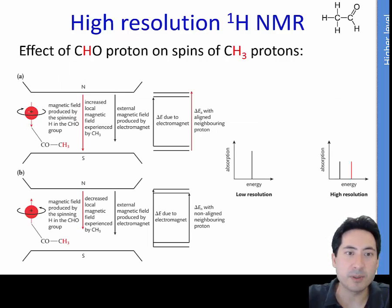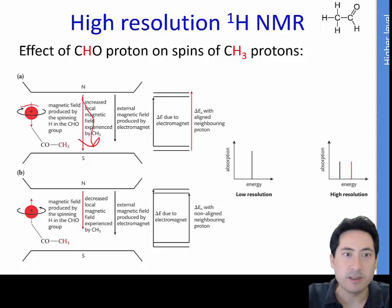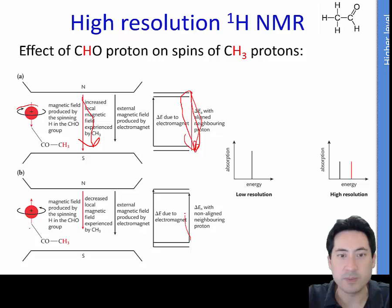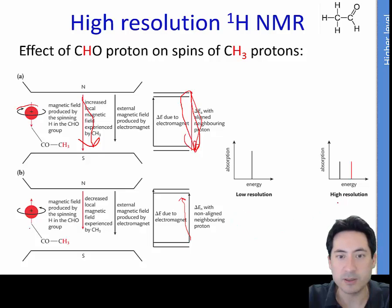Here we have an example of a proton spinning in one direction. If a neighboring proton is spinning in the same direction, it's going to increase the magnetic effect. If it's spinning in the opposite direction, it will shield out the magnetic effect. Please go to the standard level to have a look at that.